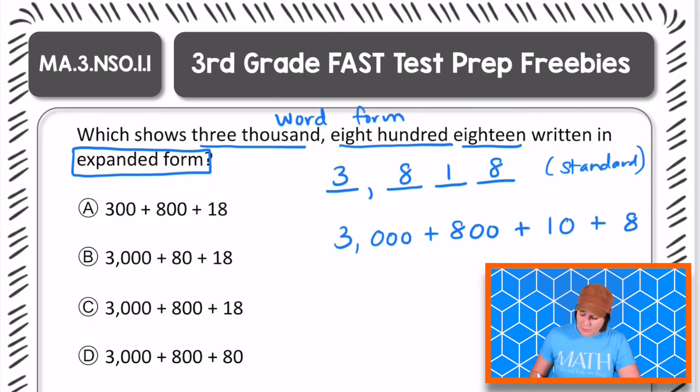So A says that we have 300 plus 800 plus 18. I see that the 300 right there it actually needs to be 3,000. So this is the part that makes it wrong. We can eliminate choice A.